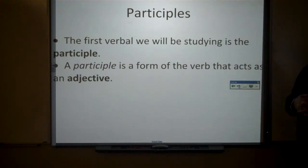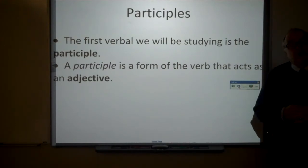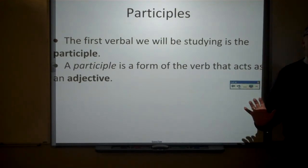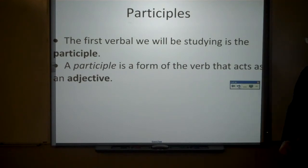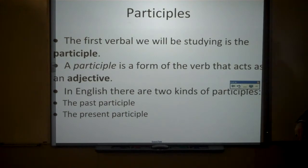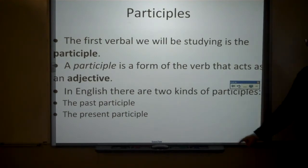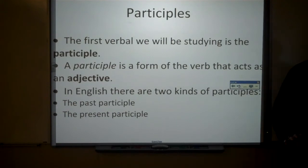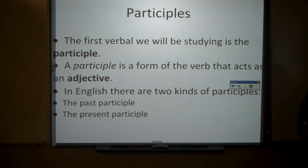The first verbal we will be studying is the participle. A participle is a form of the verb that acts as an adjective — always an adjective, but formed from the verb. There are two kinds of participles: the past participle and the present participle, and they each have a different form.